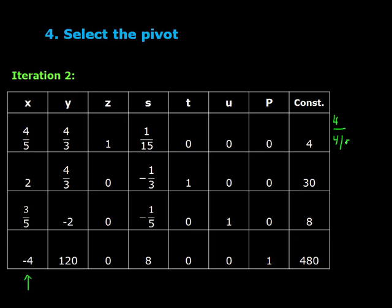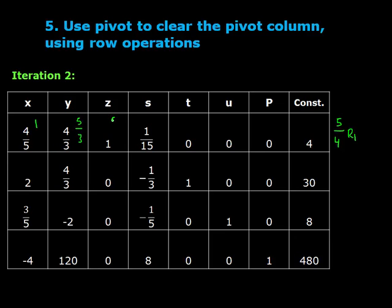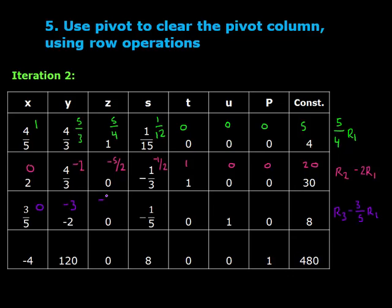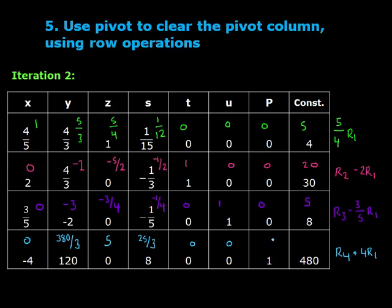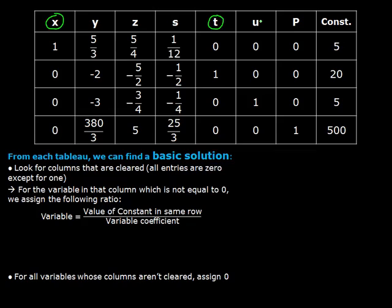Here, the first column is the pivot column. Again, we must find the test ratios for each row. Coincidentally, row 1 again has the smallest test ratio and so our new pivot is 4 fifths. We go back to step 5 and once again, we must clear the pivot column using the row operations. There are no more negative values in the bottom row. So, we have solved our problem using the simplex algorithm in just two iterations.